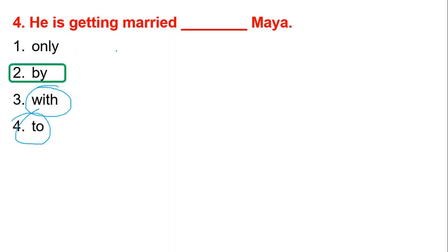He is getting married ___ Maya. Option number four is the correct answer: He is getting married to Maya.